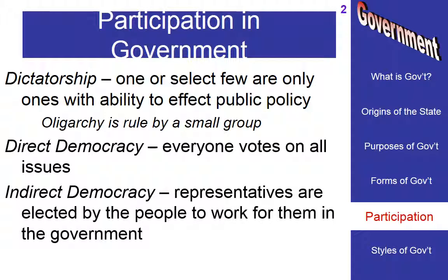Indirect democracy is where we go and vote every year, every other year, or every four years, depending on what's going on in state and national government. We pick people to represent us and do the job for us. Now, there are some places in New England that still have direct democracy, where at least once a year the entire town gets together for a town meeting where everyone votes on all town business. But direct democracies are very hard to do on anything beyond a town scale.